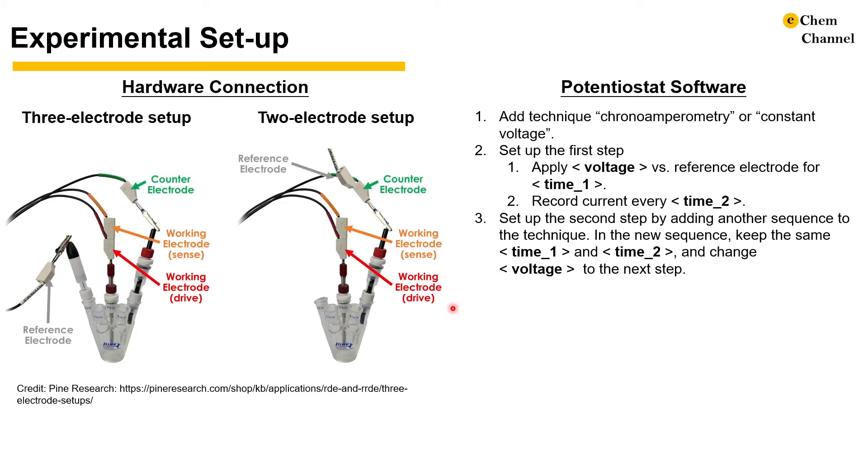Because this is a multiple step technique, we need to set up the other steps. Different potentiostat manufacturers may have different setups, but please find a method that allows you to ramp from one potential step directly to the next, without letting the potential drop to open-circuit potential in between.